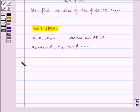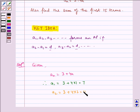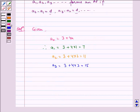Now let us write the solution. Given an = 3 + 4n, therefore a1 = 3 + 4(1) = 7. Similarly, a2 = 3 + 4(2) = 11, a3 = 3 + 4(3) = 15, and a4 = 3 + 4(4) = 19.